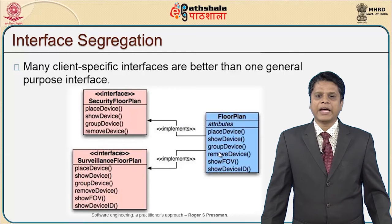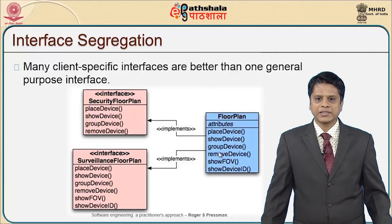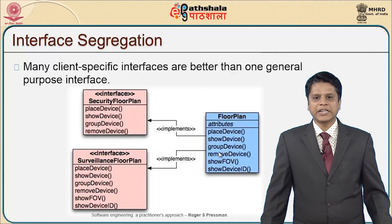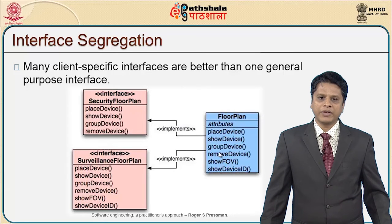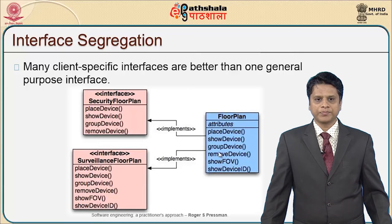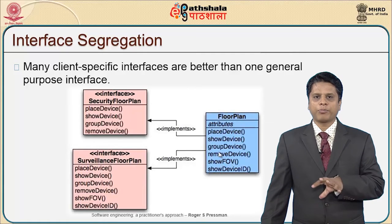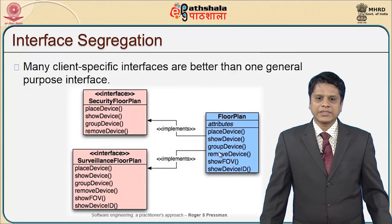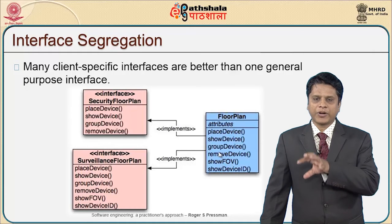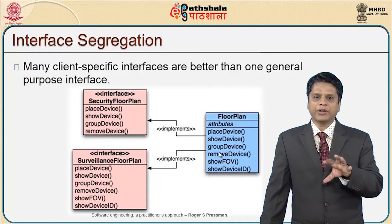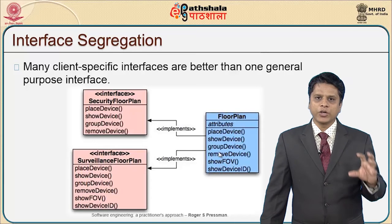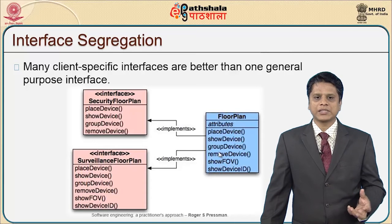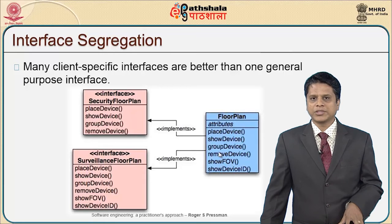For example, when I have a component called floor plan with attributes like place device, show device, group device, and remove device — it implements interfaces for where to place the device, whom to show the device, which devices are to be grouped, and when they should be removed. This is for a security floor plan. Floor plans can be many: one for security, another for surveillance. For a security plan I might require only a few attributes or operations, whereas for the surveillance floor plan I require another group of operations.